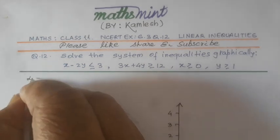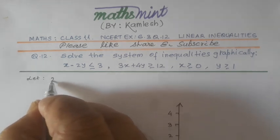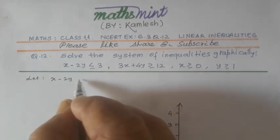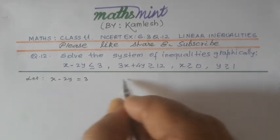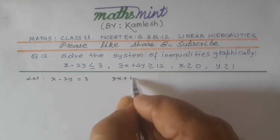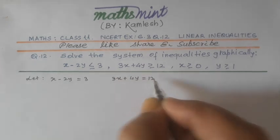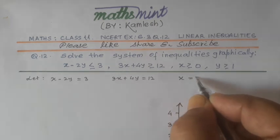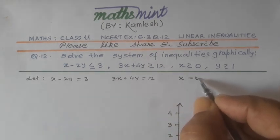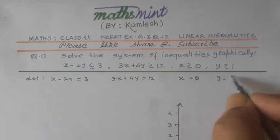Let's take x minus 2y equal to 3, 3x plus 4y equal to 12, x equal to 0, and y equal to 1.